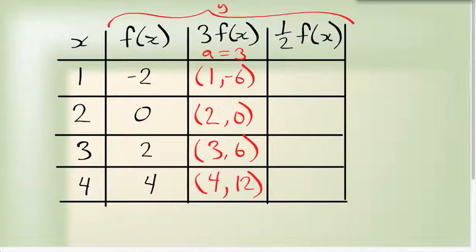Now the same thing happens if I look at this compression. My factor is 1 half. All that really means is I take all of my y values and I multiply them by a half. So my x doesn't change, but my y value, half of negative 2, is negative 1.